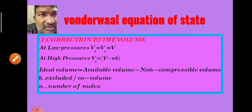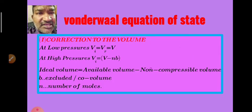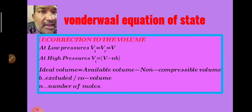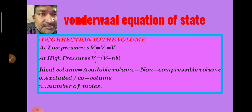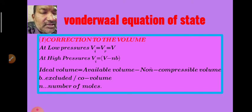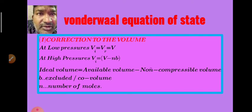Van der Waals made corrections to the ideal gas equation and proposed a new equation known as the Van der Waals equation of state. By using this equation he was able to explain the deviations. He first corrected the volume, then made a correction to the pressure.